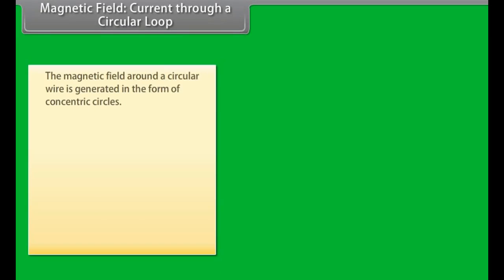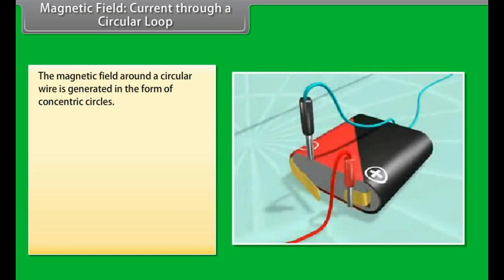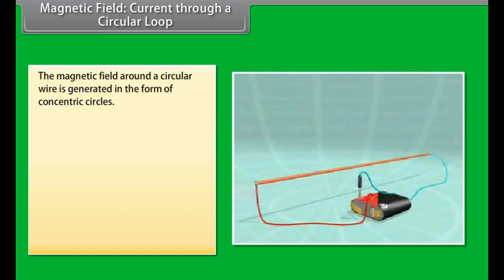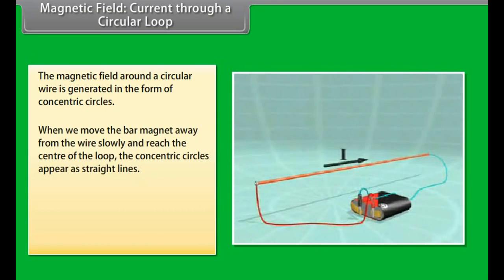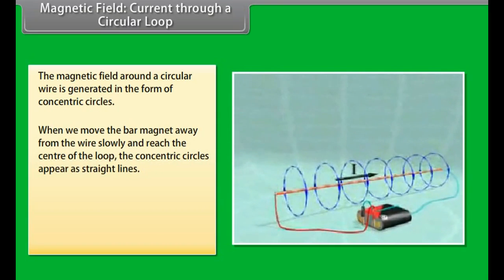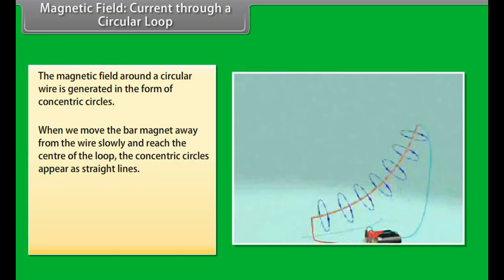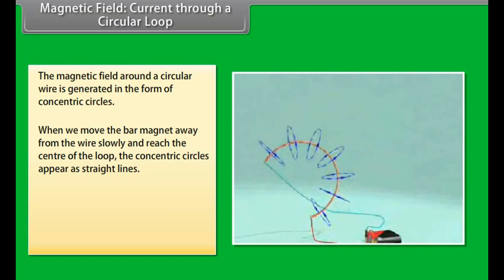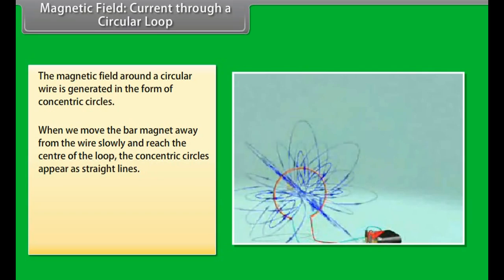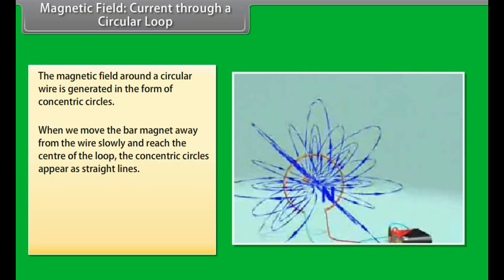Magnetic field current through a circular loop. Let us now look at what happens when the wire through which we passed the current is placed in a circular manner. The magnetic field around it is generated in the form of concentric circles. Try moving the bar magnet away from the wire slowly. By the time we reach the center of the loop, the concentric circles appear as straight lines. The entire magnetic field appears as a straight line.